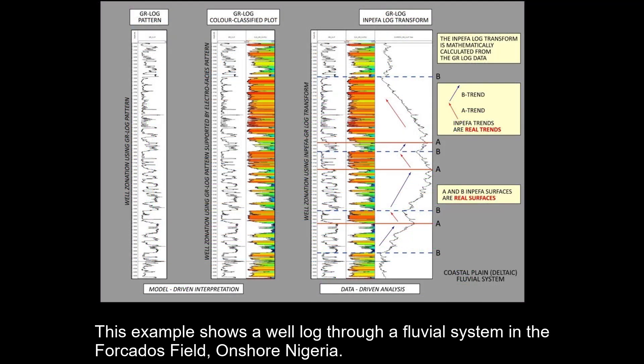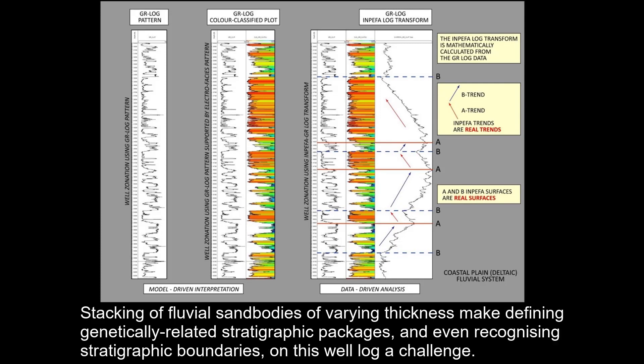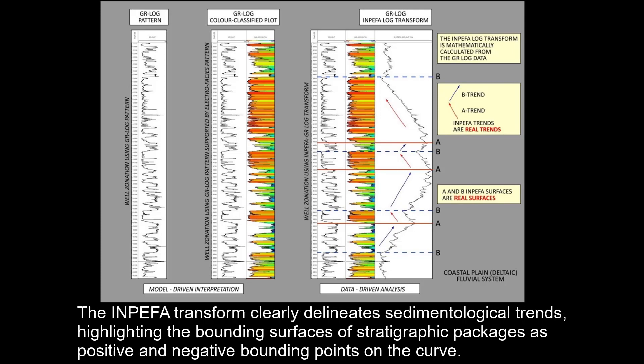This example shows a well log through a fluvial system in the Fosados field onshore Nigeria. Stacking of fluvial sandbodies of varying thickness make defining genetically related stratigraphic packages, and even recognizing stratigraphic boundaries, on this well log a challenge. The INPEFA transform clearly delineates sedimentological trends, highlighting the bounding surfaces of stratigraphic packages as positive and negative bounding points on the curve.